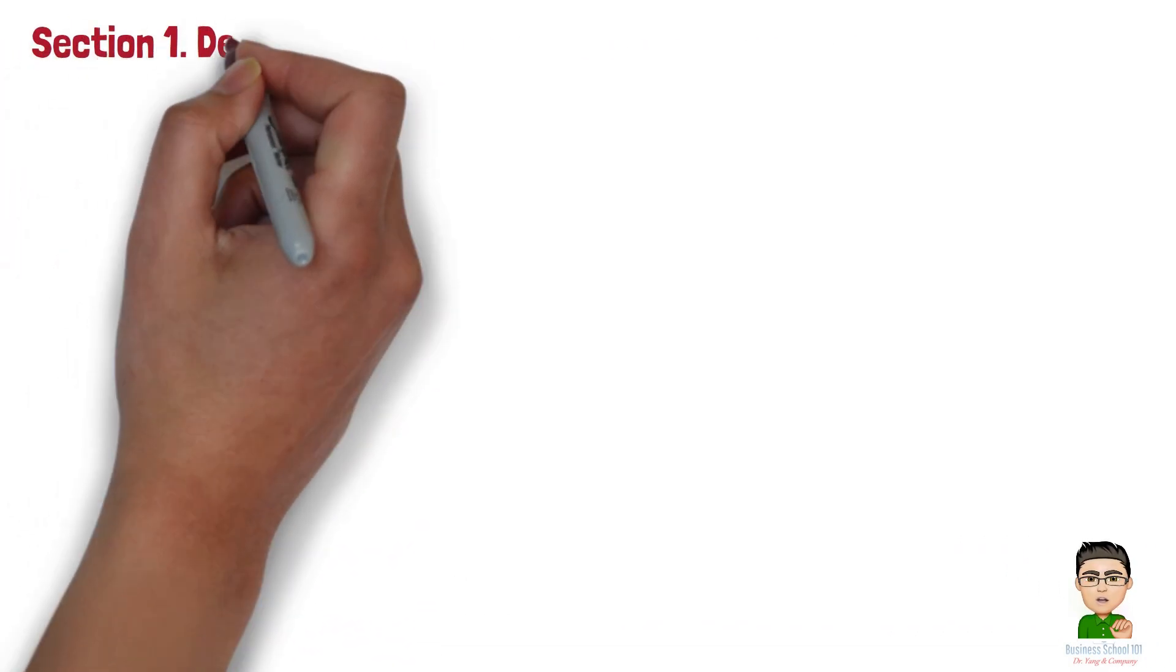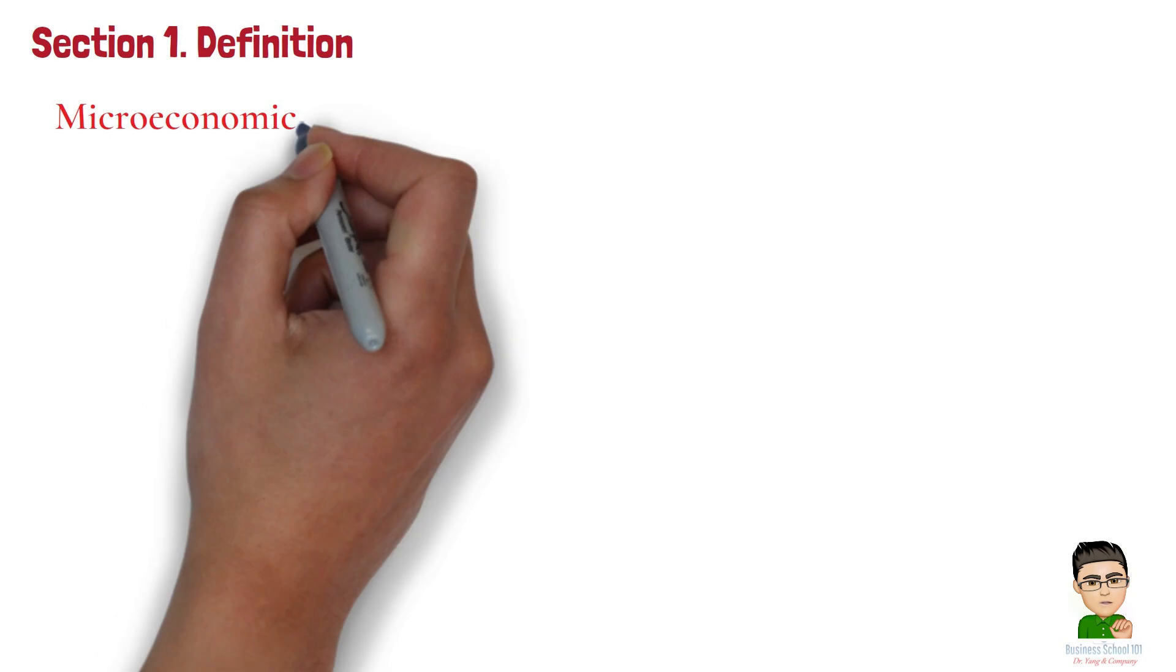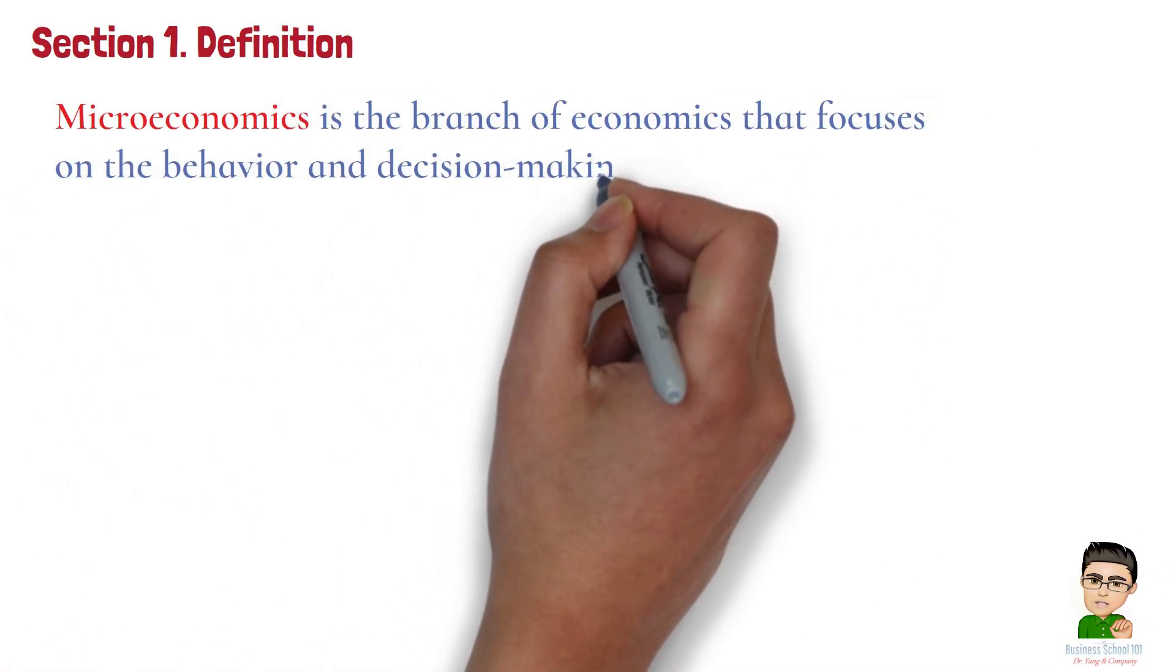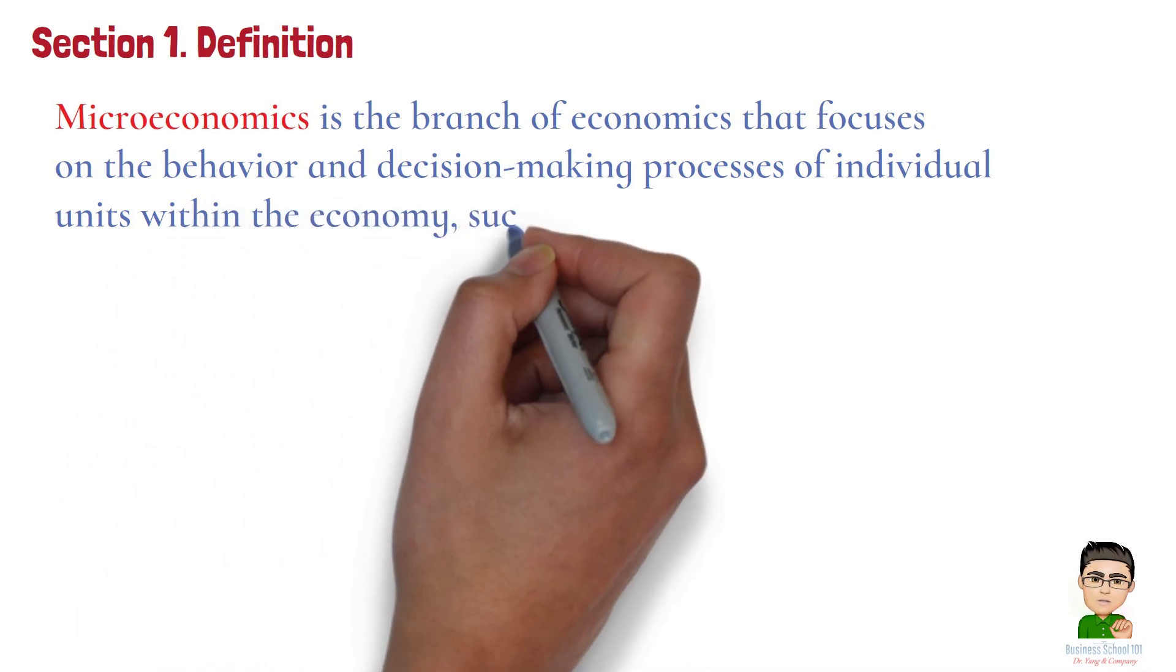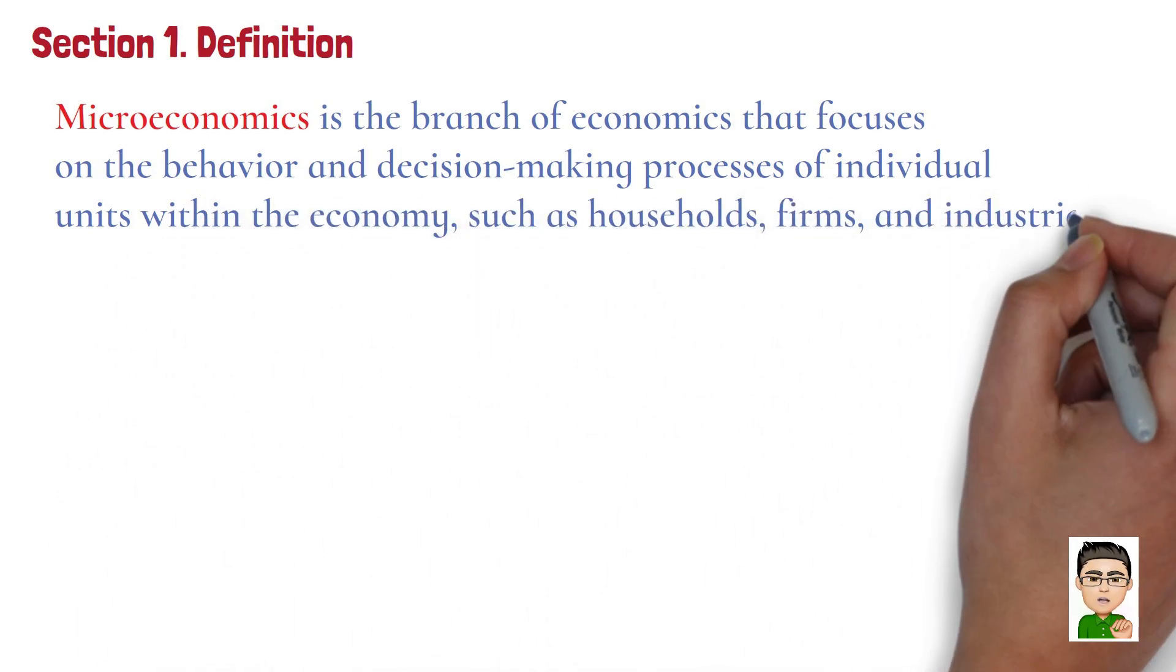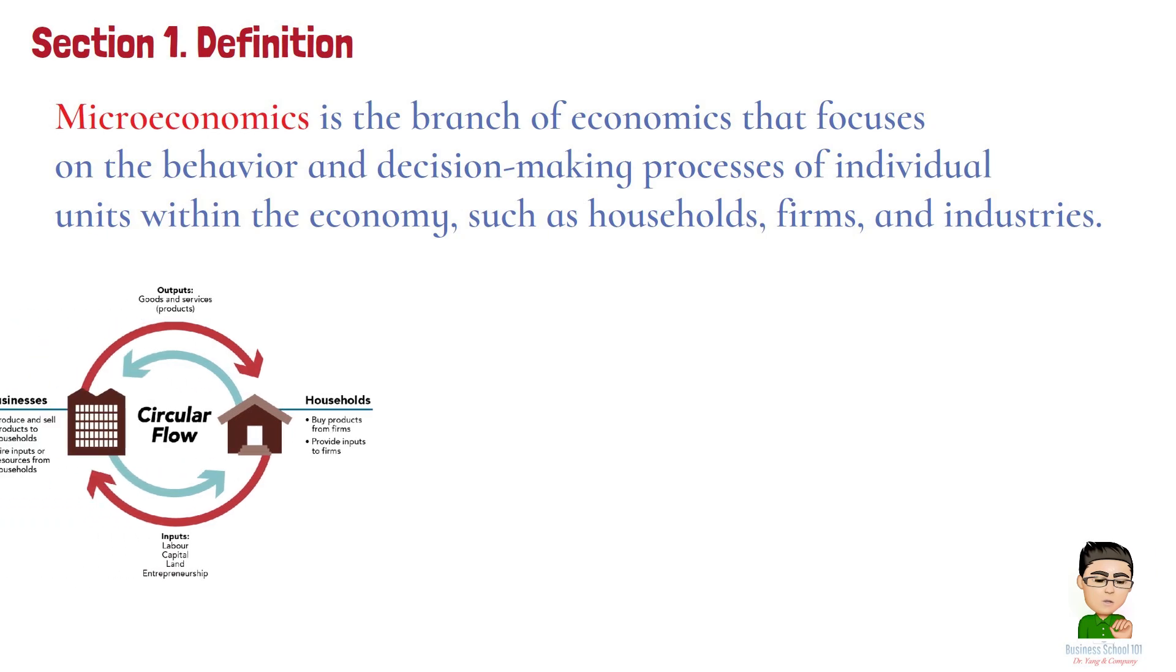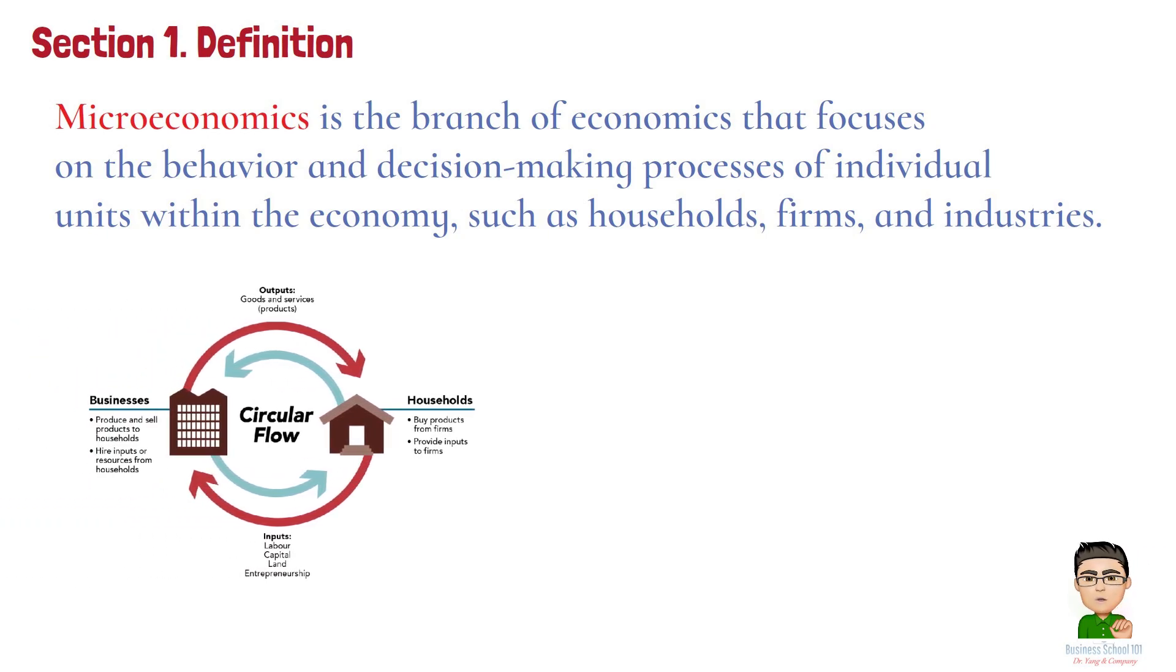Section 1. Definition. Microeconomics is the branch of economics that focuses on the behavior and decision-making processes of individual units within the economy, such as households, firms, and industries. It examines how these entities interact in markets, how they respond to changes in prices, and how they allocate resources.